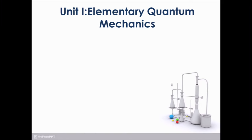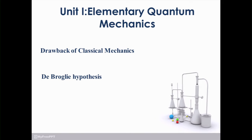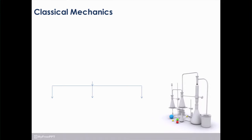It consists of a number of subsections. Out of all subsections, in today's lecture we are going to focus on the drawbacks of classical mechanics, de Broglie hypothesis, and the Heisenberg uncertainty principle.